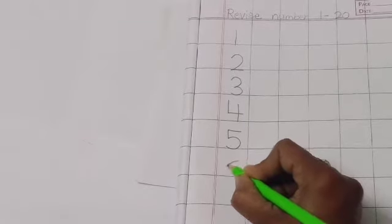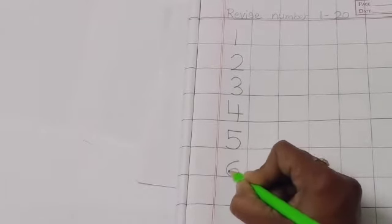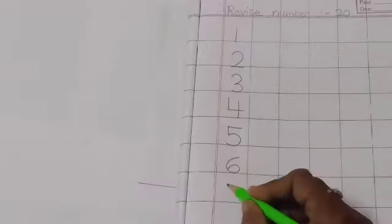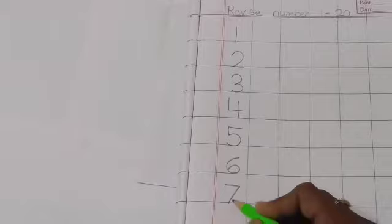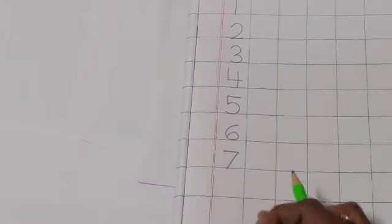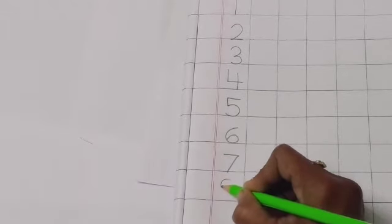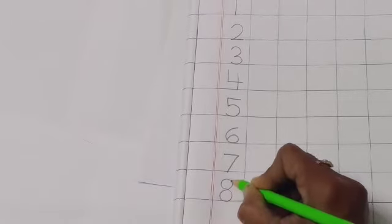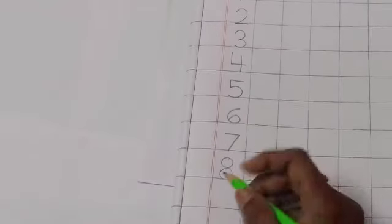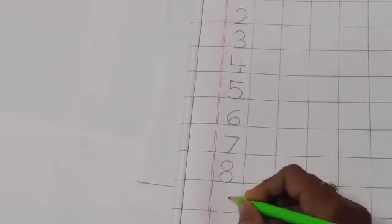Right curve, make a loop and join up — Number 6. Slipping line and slanting line — Number 7. Draw a curve, go down a curve, go up, join to the top — Number 8. Curve, go up, touch the dot and come down — Number 9.